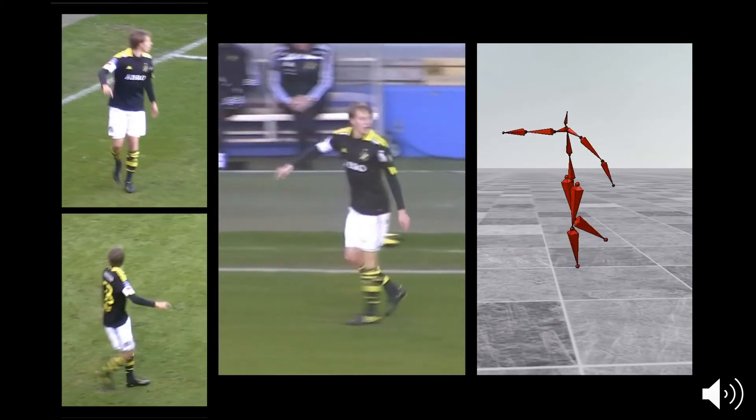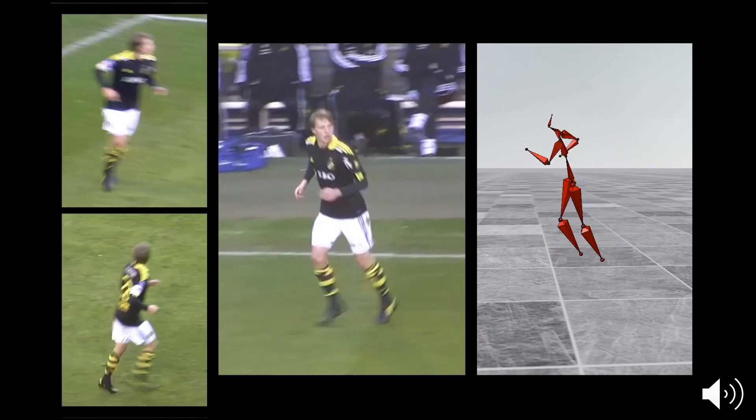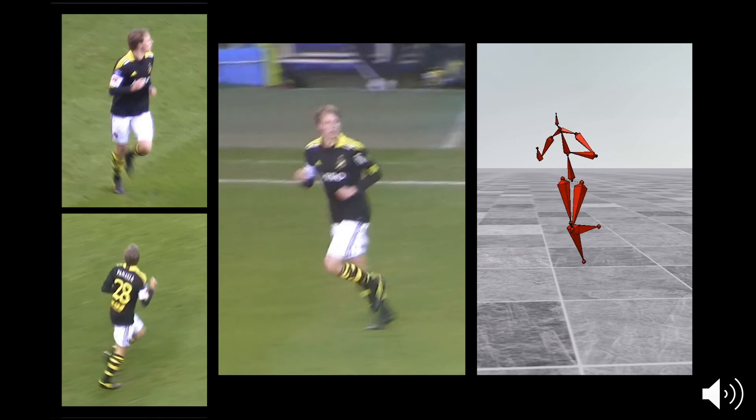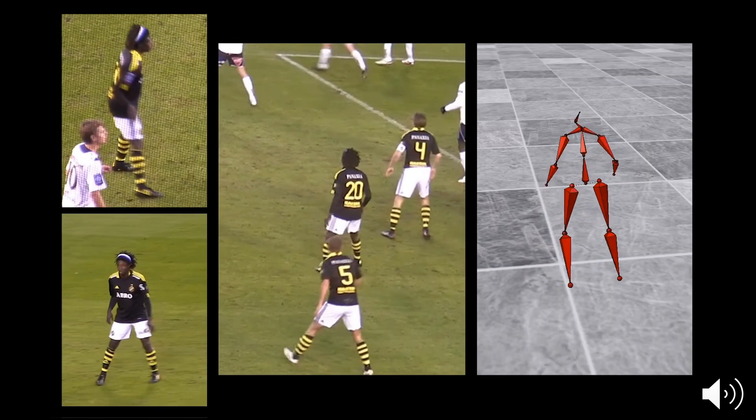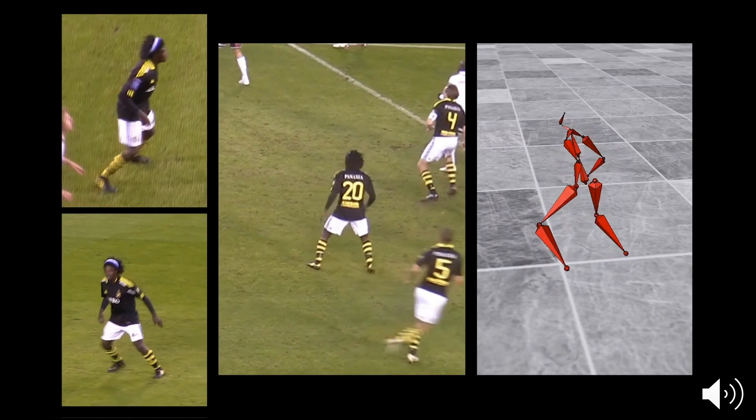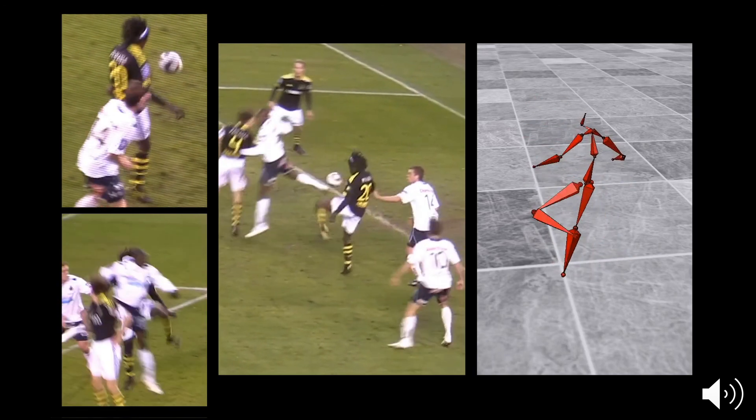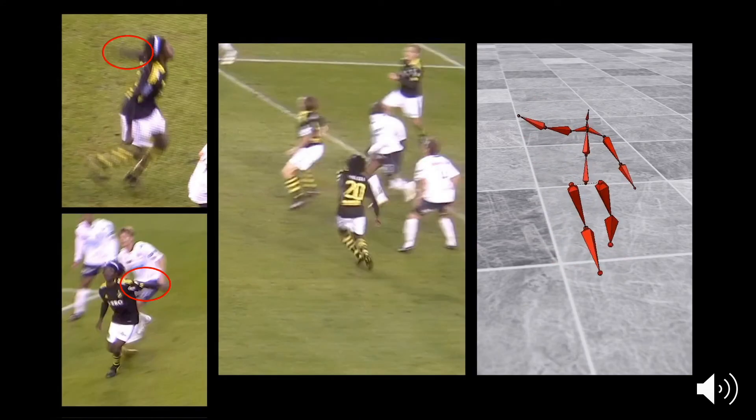Here are our results on the KTH multi-view Football 2 dataset. Although this dataset is filmed by dynamic cameras and contains significant occlusions, FLEX is still able to handle this more challenging setting. Notice how we do not miss the waving of the hand even though it is occluded in the center view and blurred in the left views.